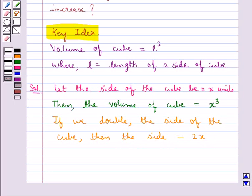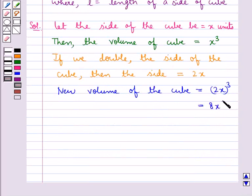Now for the side 2x, the new volume of the cube would be equal to (2x)³ using the formula. And this is equal to 8x³.